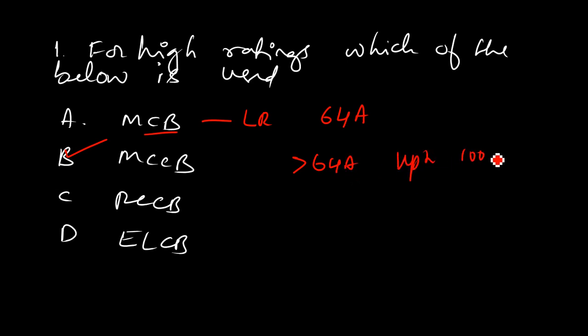MCCB starts greater than 64 amperes up to 1000 amperes, and sometimes manufacturers are coming out with 2000-3000 amperes. But if it exceeds 1000 amperes, we go for circuit breakers - Air Circuit Breaker, Vacuum Circuit Breaker, and other circuit breakers.